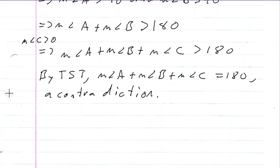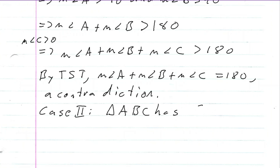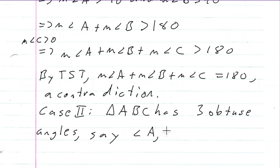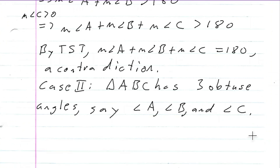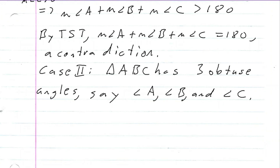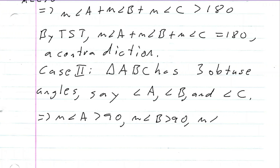Now let's do case two: triangle ABC has three obtuse angles — say angle A, angle B, and angle C. This implies the measure of angle A is bigger than 90, the measure of angle B is bigger than 90, and the measure of angle C is bigger than 90.